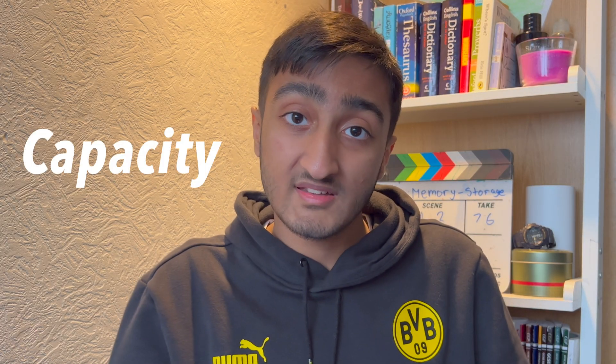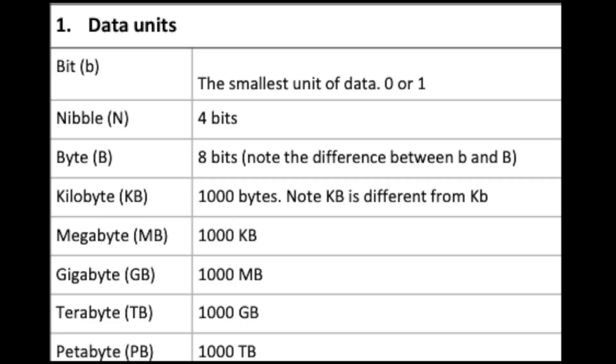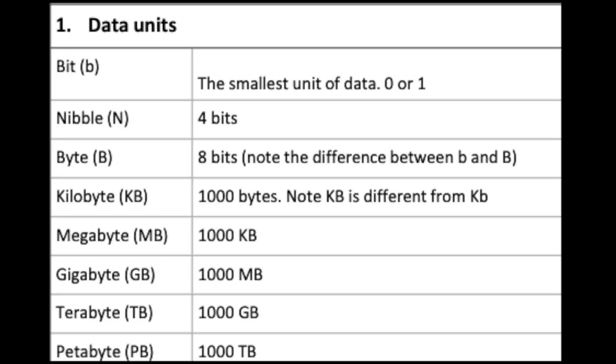Now we need to talk about capacity — how much data you can actually store inside one of these devices. A bit is the smallest measurement of data. A nibble is four bits. Eight bits is one byte. A kilobyte is 1,024 bytes — but because you're not allowed a calculator in the exam, you can simplify this to 1,000. So: one kilobyte is 1,000 bytes, one megabyte is 1,000 kilobytes, one gigabyte is 1,000 megabytes, and 1,000 gigabytes is one terabyte. In the exam they will ask you to convert between these units.